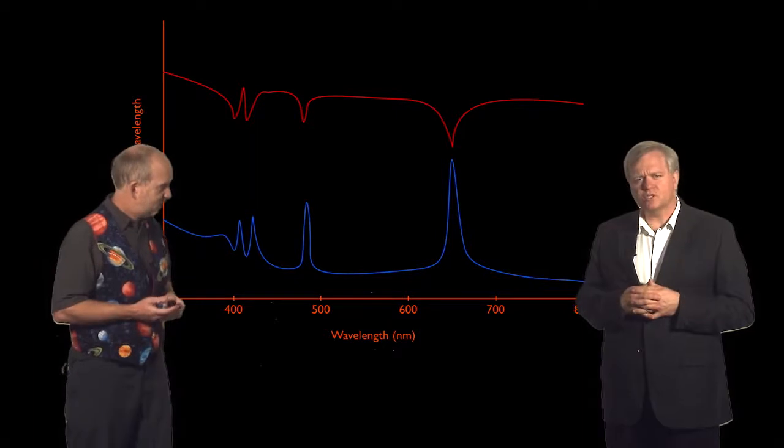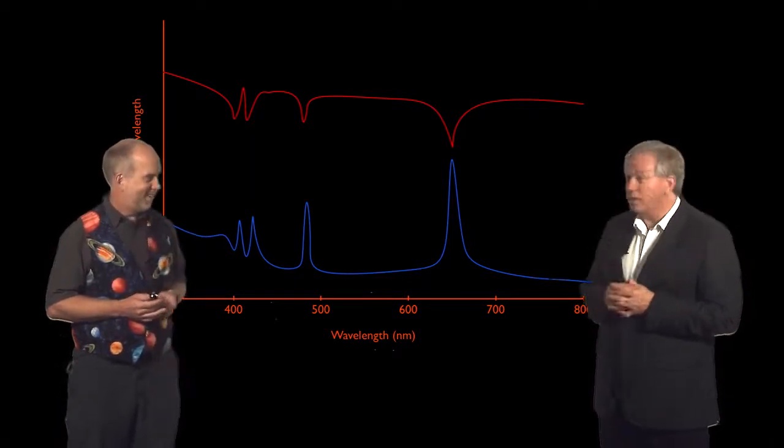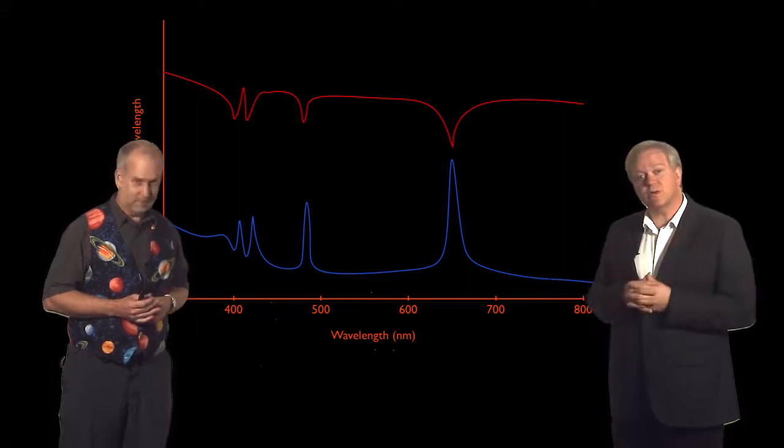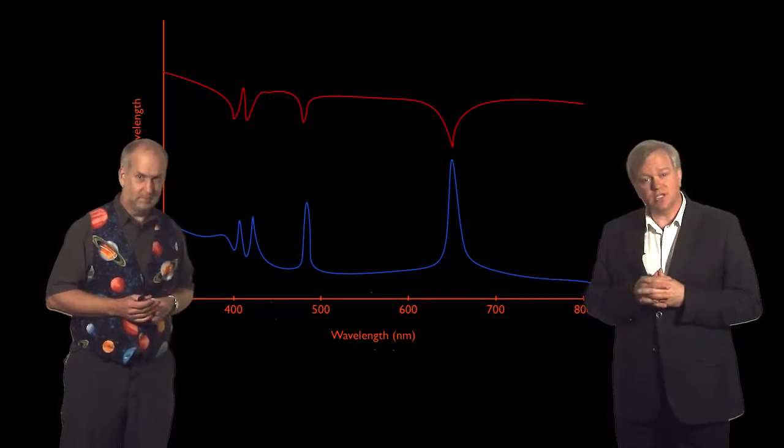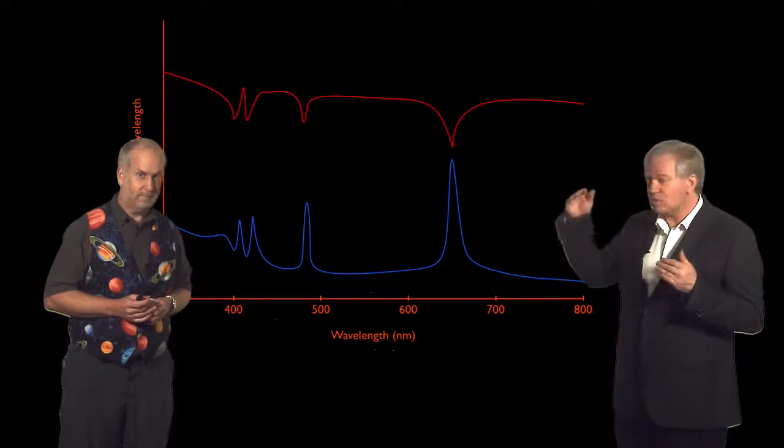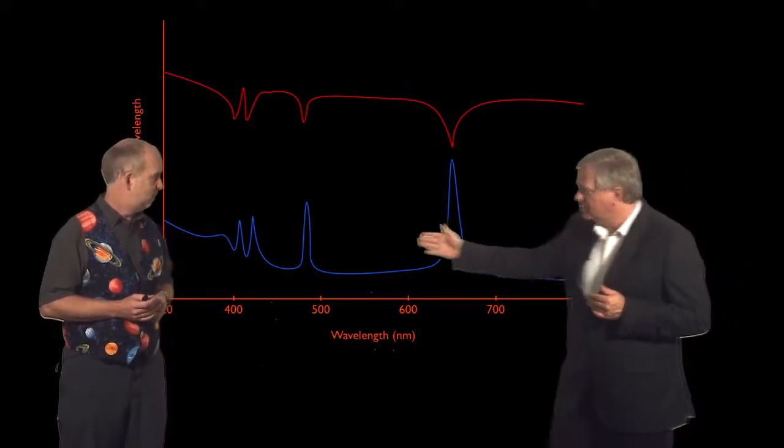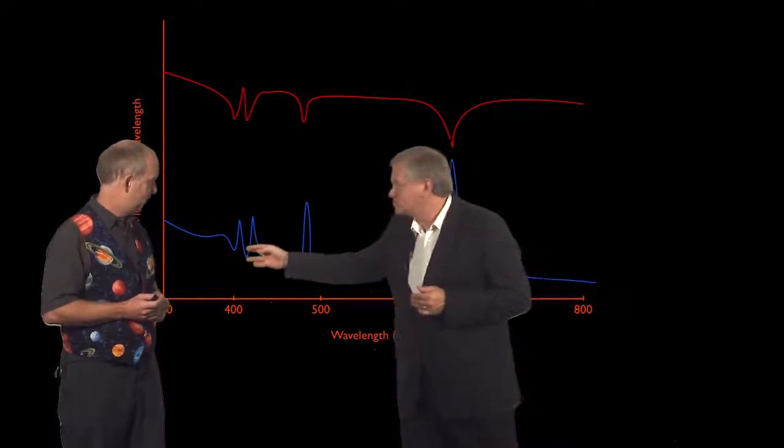Those numbers ring a bell to Paul and me, and maybe even to you by now, because those are the places where hydrogen likes to emit light, as it makes a transition from level three to level two, in this case, level four to two, five to two, six to two.